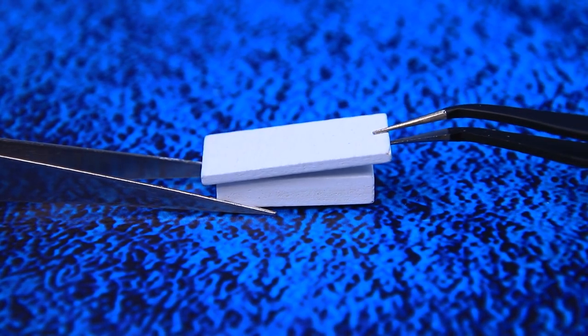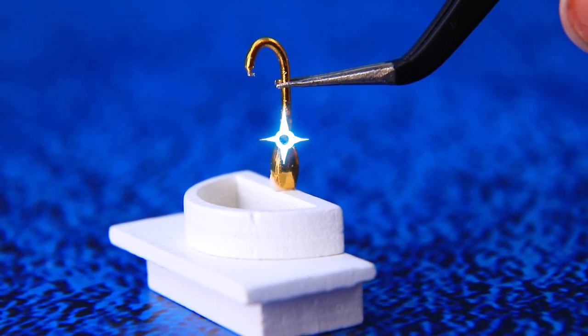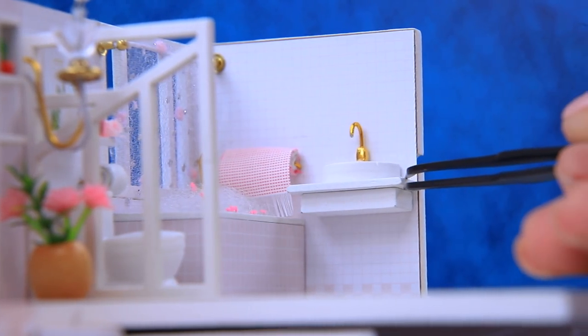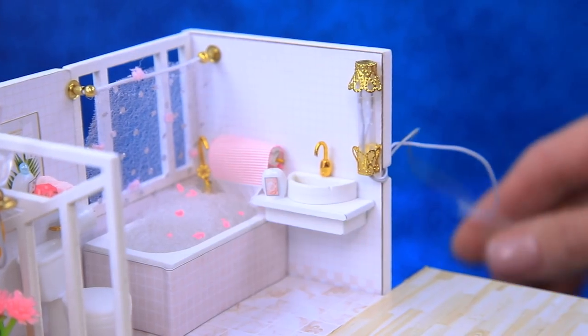Make a tiny sink out of a few white pieces. There is a gold faucet on the sink. Install a lamp nearby.